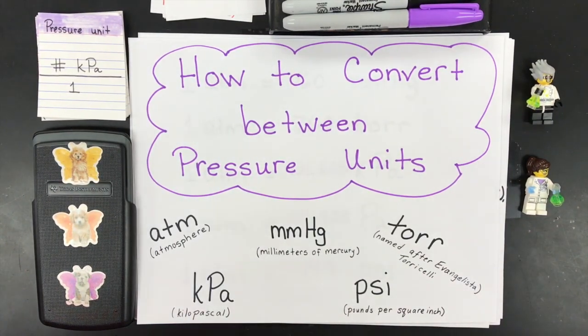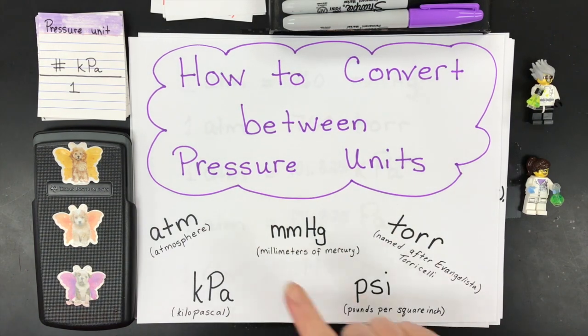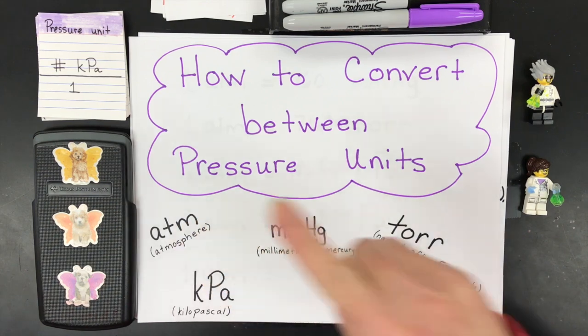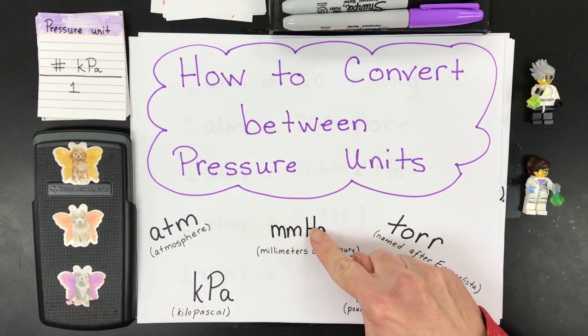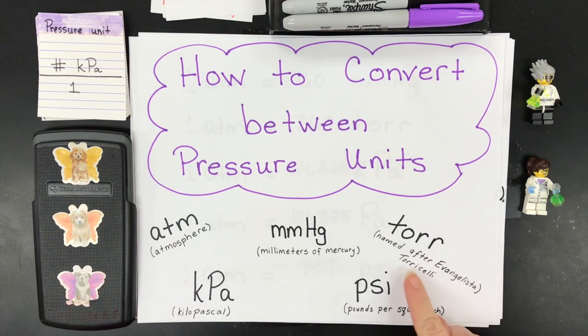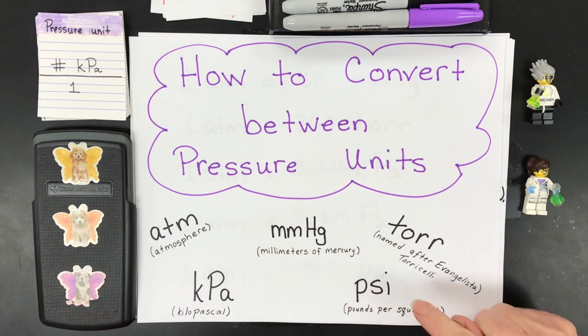Welcome back chemists. In this video we're going to learn how to convert between pressure units. ATM is one of the most common units in chemistry, called atmosphere. Another one is mmHg, called millimeters of mercury. After that I would say torr, named after Evangelista Torricelli, and then you have kPa which is kilopascals.